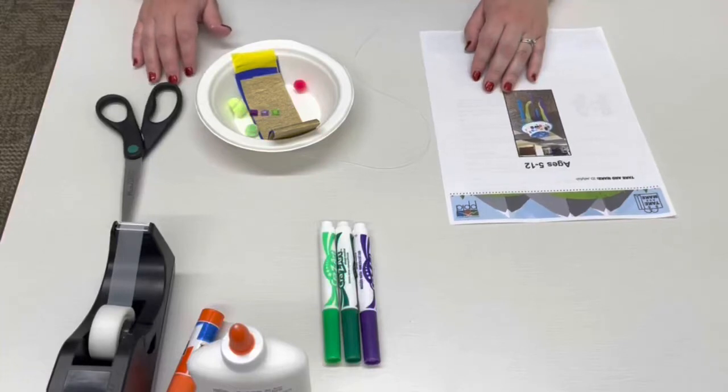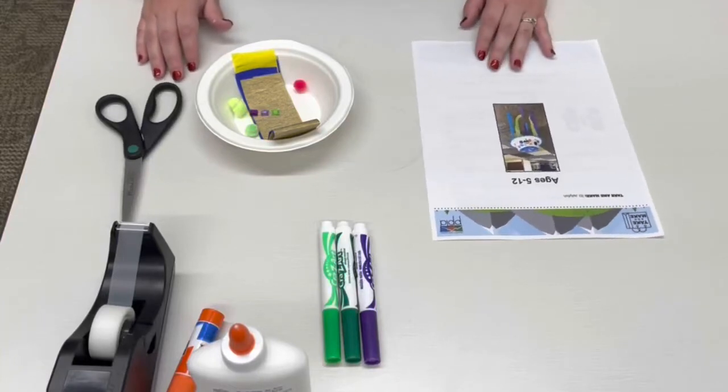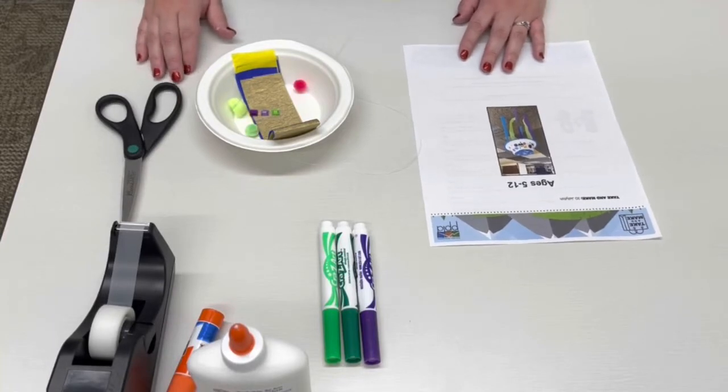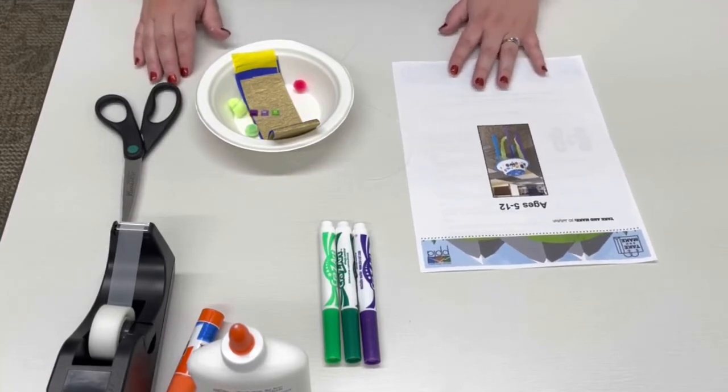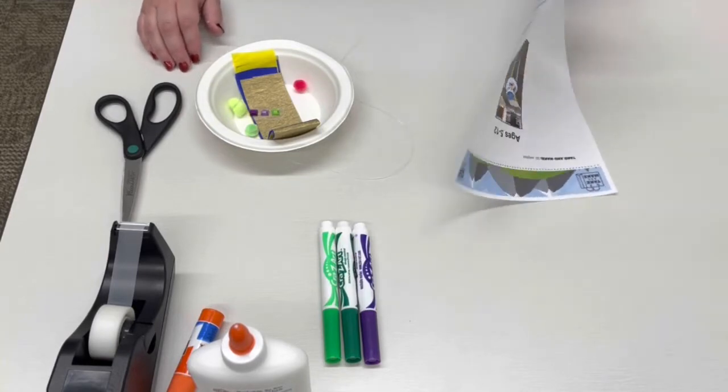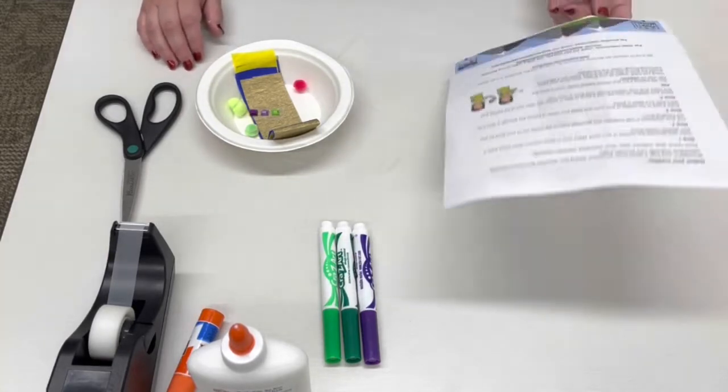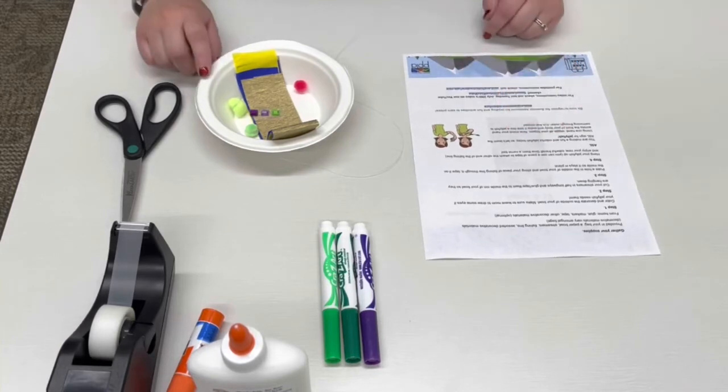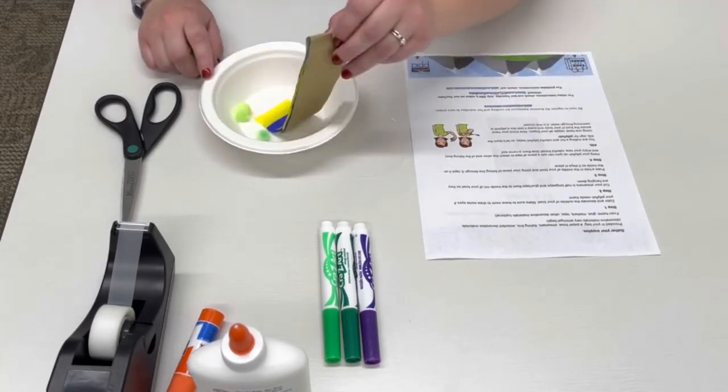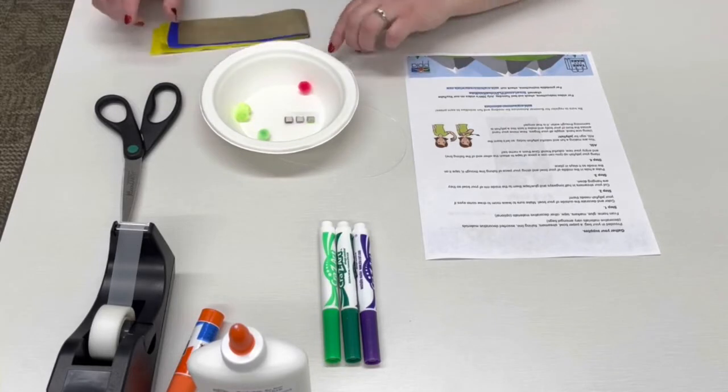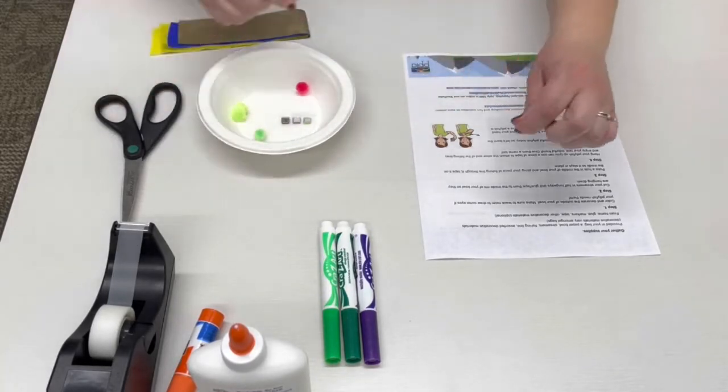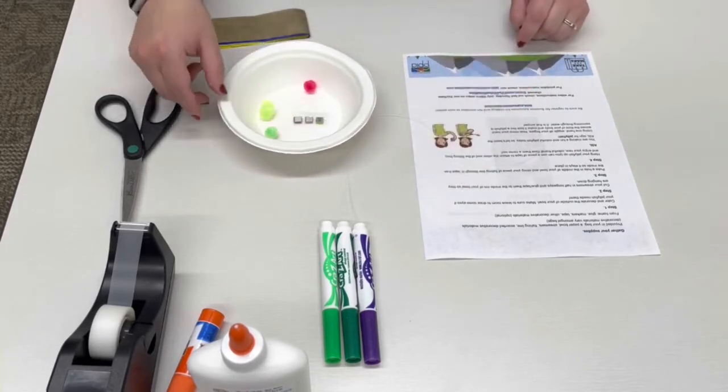Hi, welcome to the Pikes Peak Library District's kids make 3D jellyfish take and make video. In your take and make kit you will have an instruction sheet, one paper bowl, three streamers, a piece of fishing line, and assorted decorative materials.